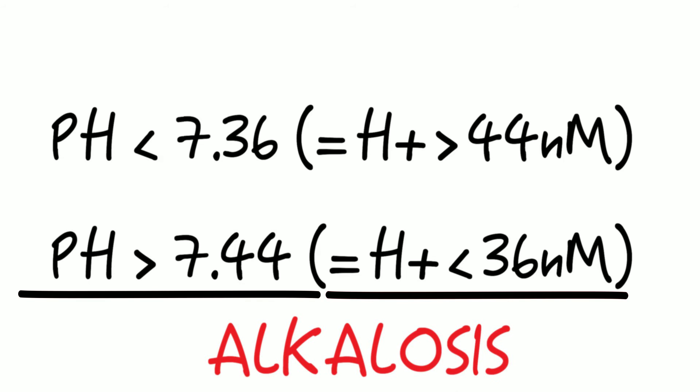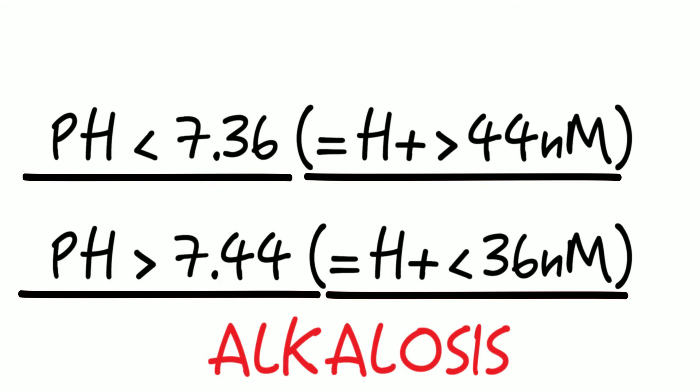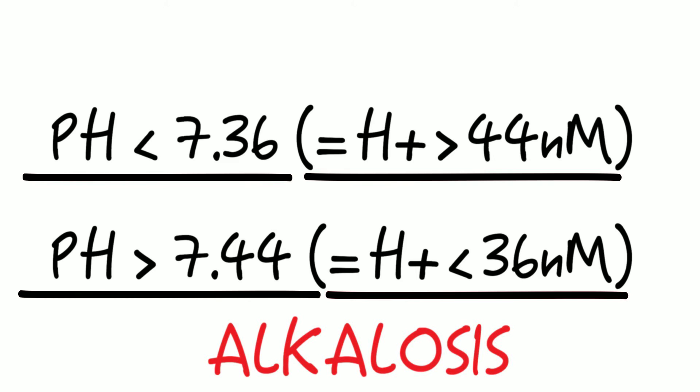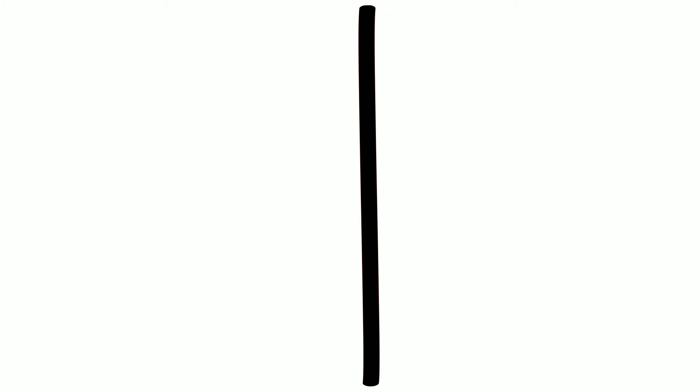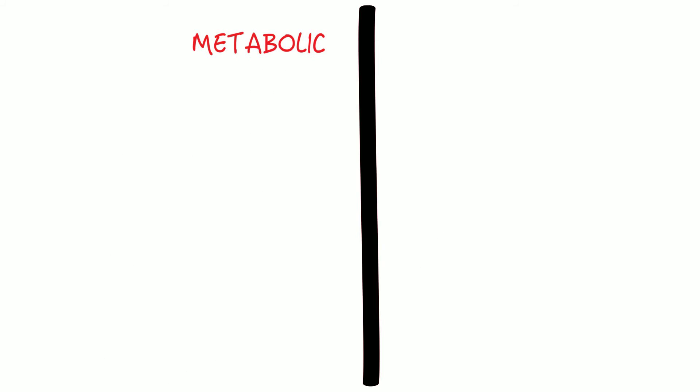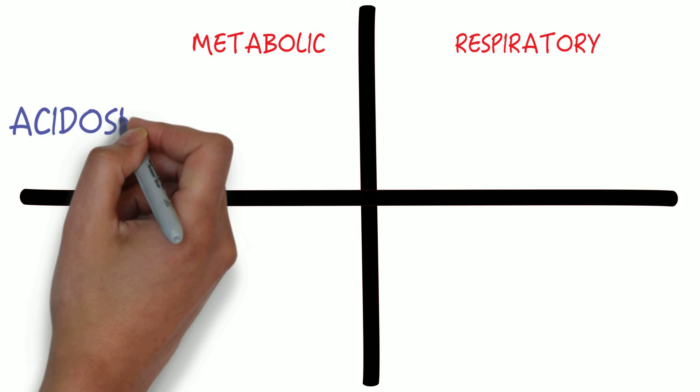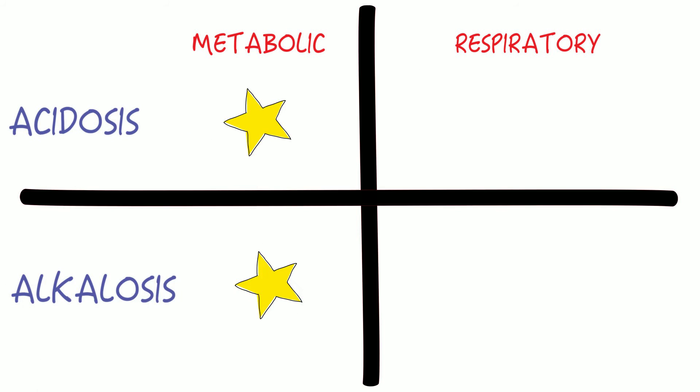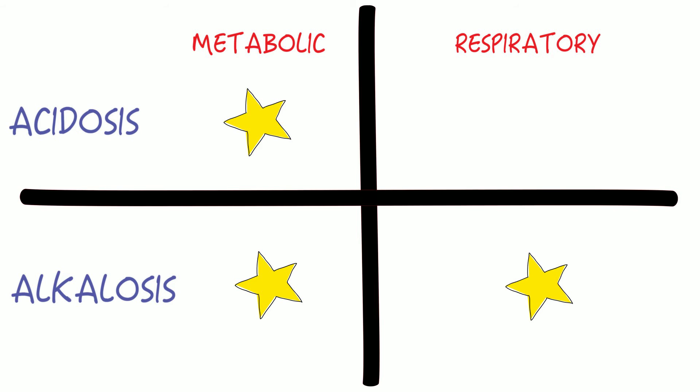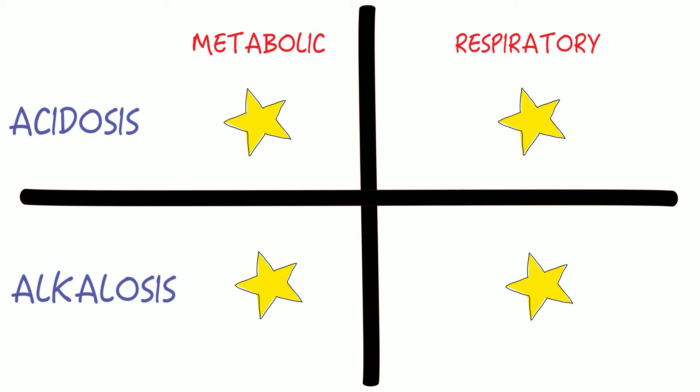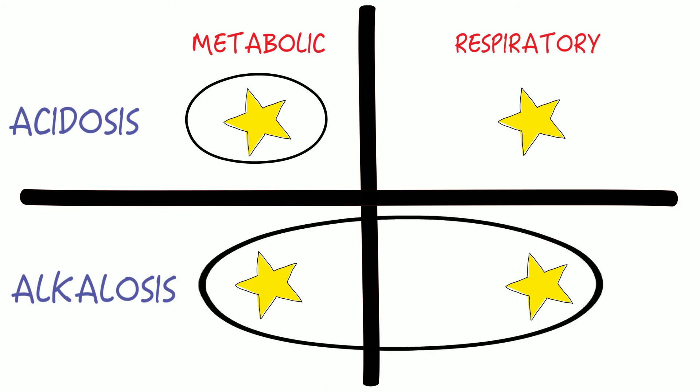On the other hand, if the concentration of free hydrogen ions is larger than 44 nanomoles per liter, this would mean that the pH value would fall below 7.36, which we would call acidosis. Acid-base disorders are classified into either metabolic or respiratory. So there's a metabolic acidosis and alkalosis, and there's a respiratory alkalosis and acidosis. These can occur isolated or combined.